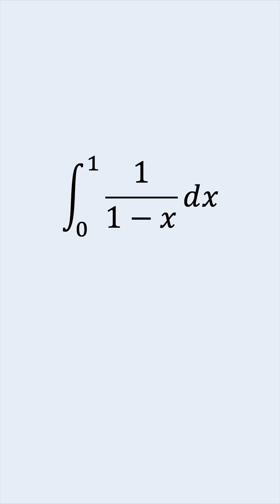How do we integrate 1 over 1 minus x from 0 to 1? And let's graph it as well.